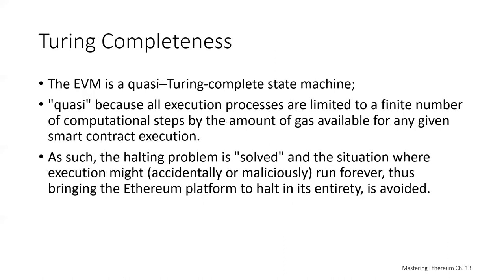Ethereum supports Turing completeness, but really the EVM is a quasi Turing complete state machine. We say quasi because all execution processes are limited by gas to a finite number of computational steps — limited by the amount of gas available for that particular smart contract execution. As such, the theoretical halting problem is solved in that all program executions will halt. There can't be an infinite loop because you'll run out of gas before you can run infinitely, so the Ethereum platform can never be trapped in an infinite loop.